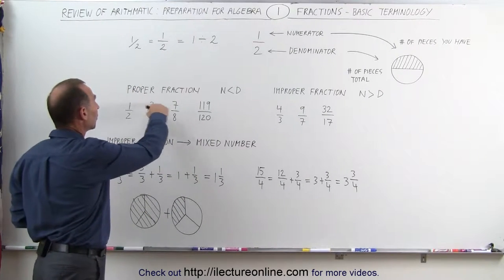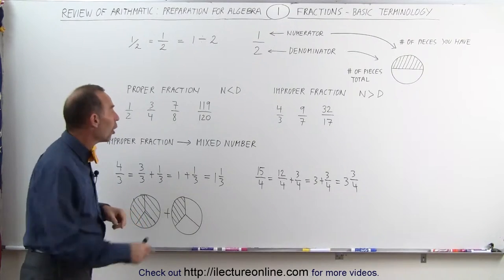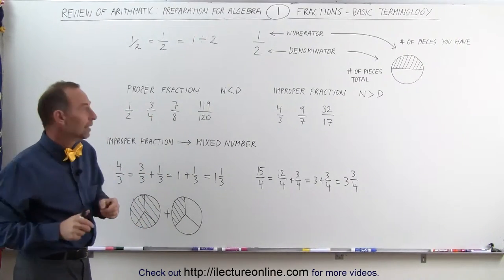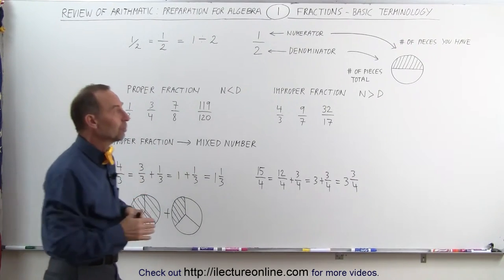You can see that in all cases, the number on top, the numerator is smaller than the number on the denominator, which means all these numbers here, or all these fractions, are less than 1. If the numerator is smaller than the denominator, the fraction has a value less than 1.